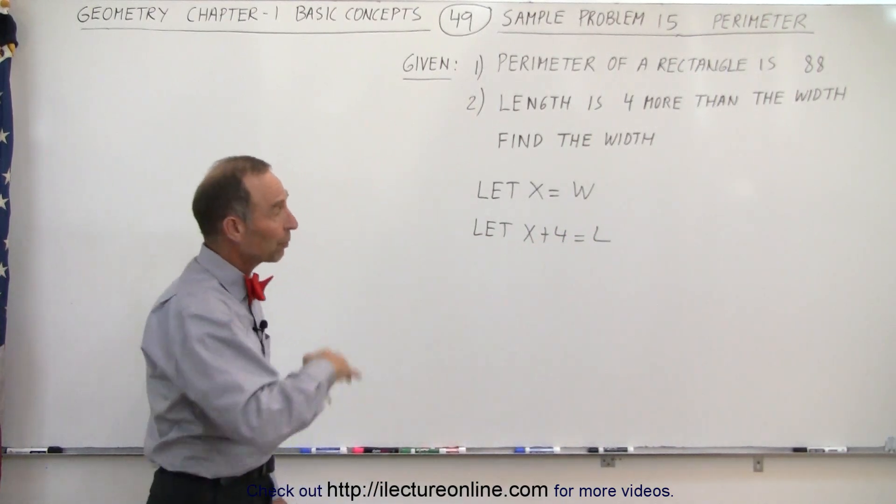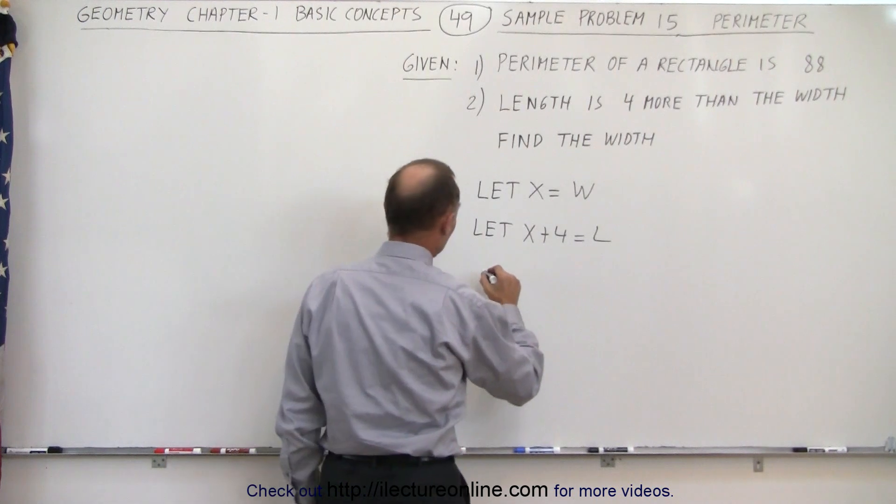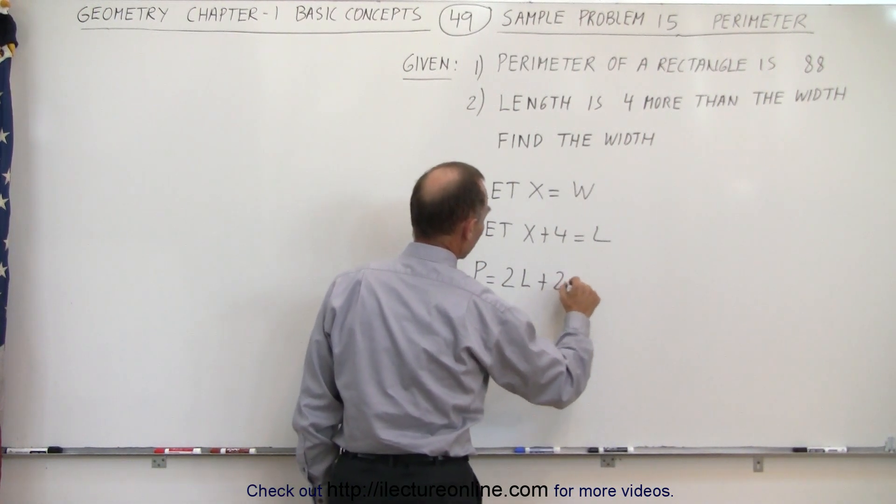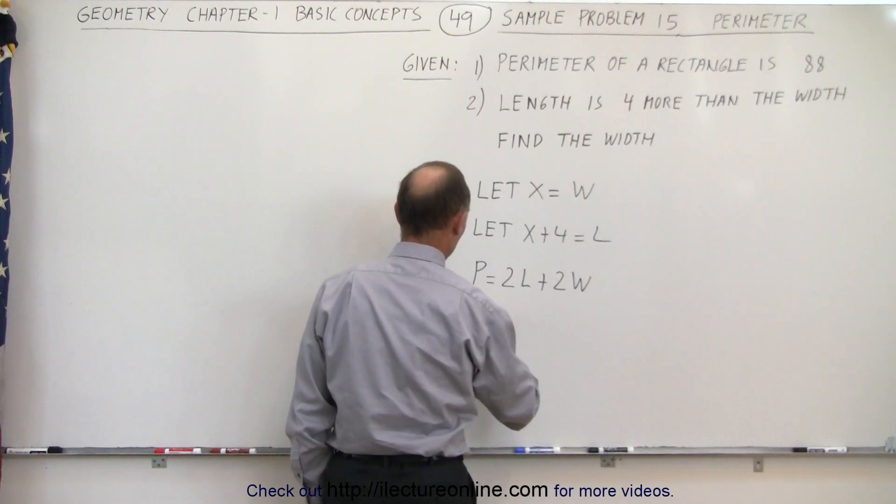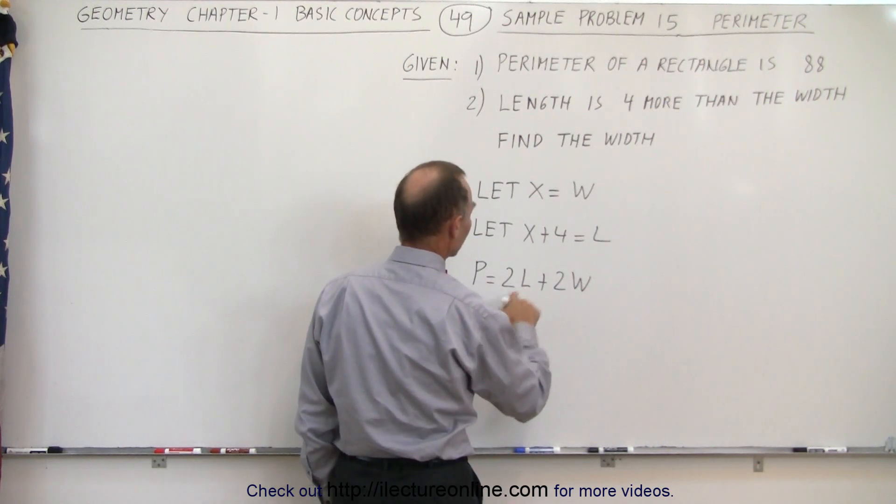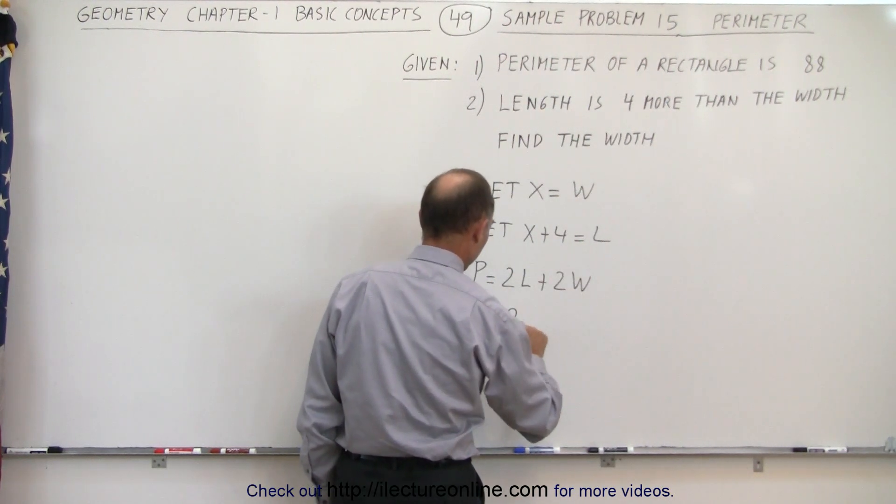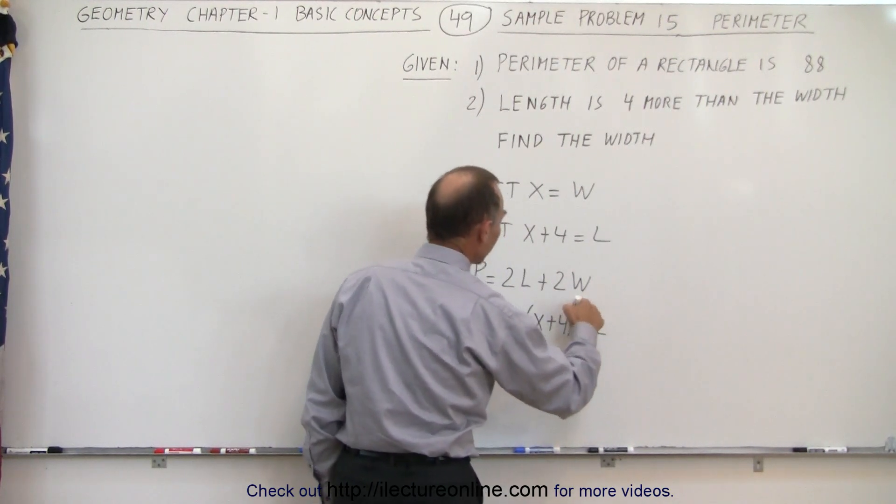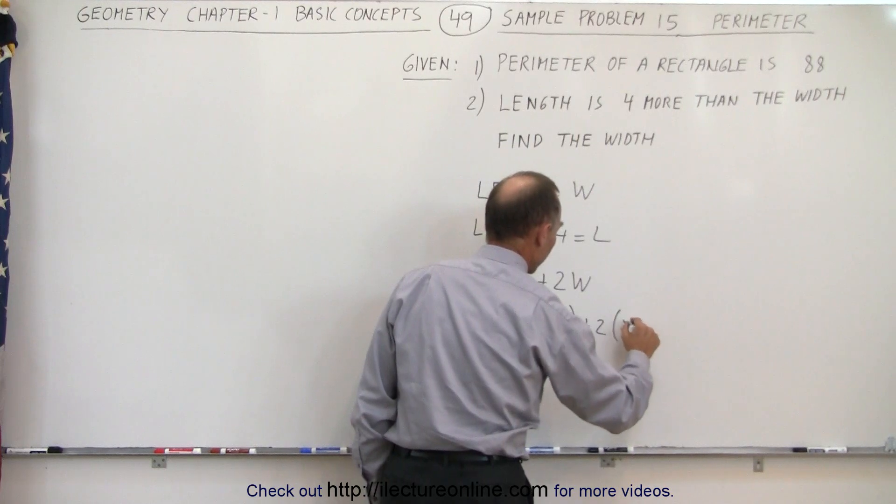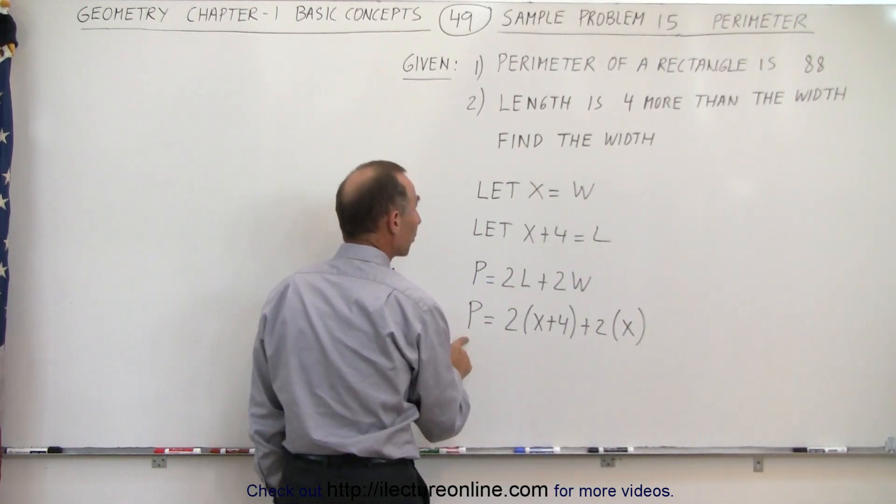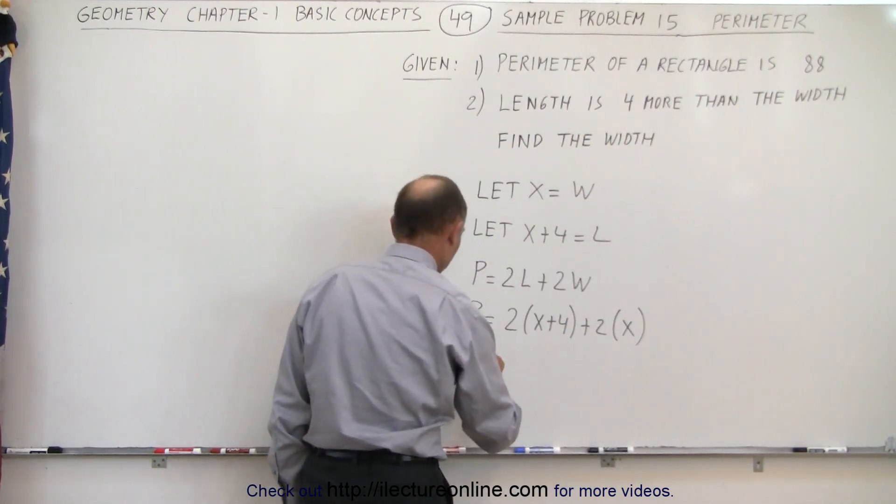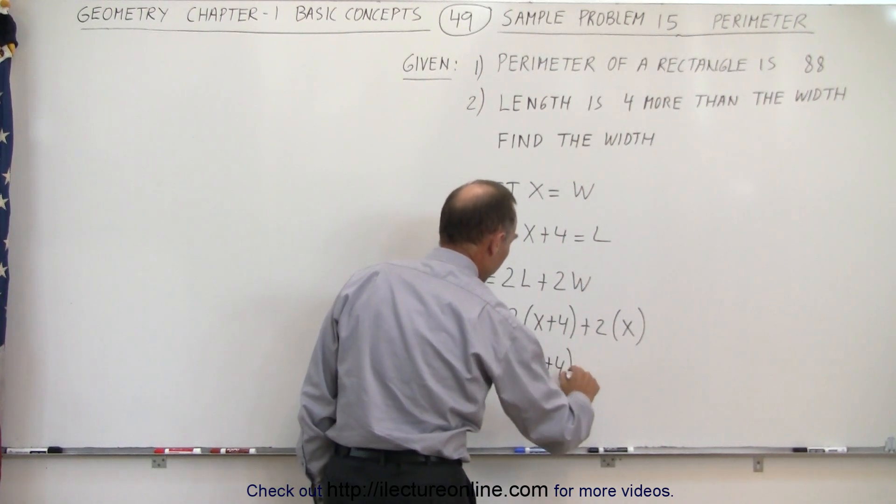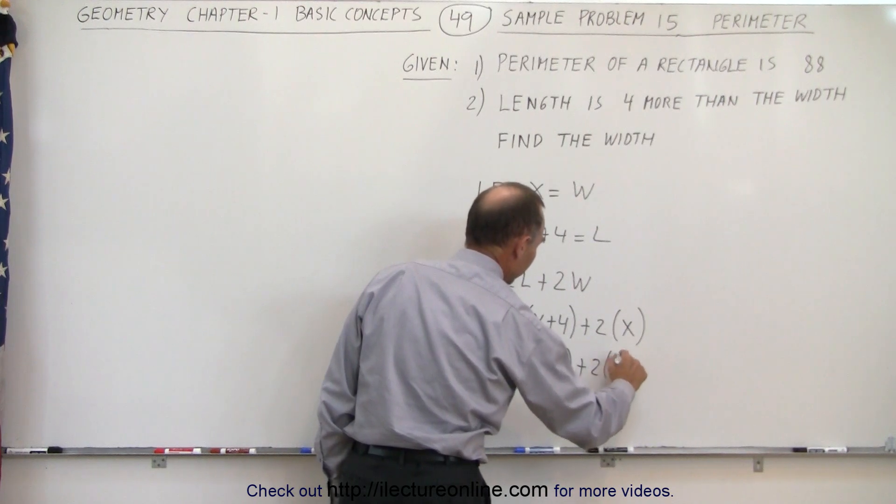And now we realize that the perimeter is simply equal to 2 times the length plus 2 times the width. So in this case the perimeter is equal to 2 times the length which is x plus 4, plus 2 times the width which is x. And we're given that the perimeter is equal to 88. So 88 is equal to 2 times x plus 4, plus 2 times x.